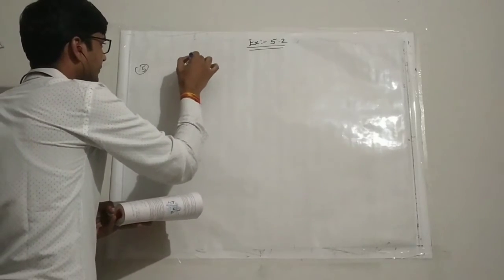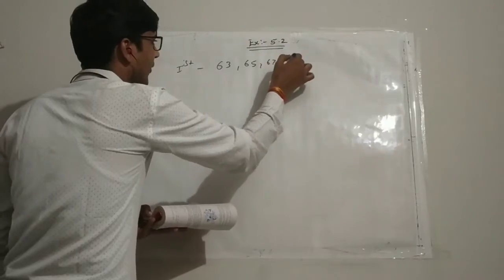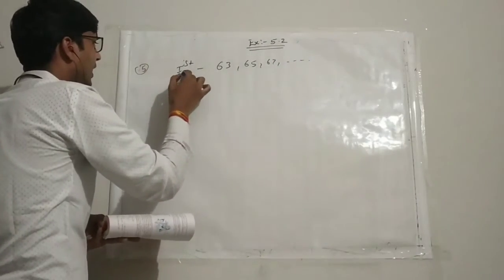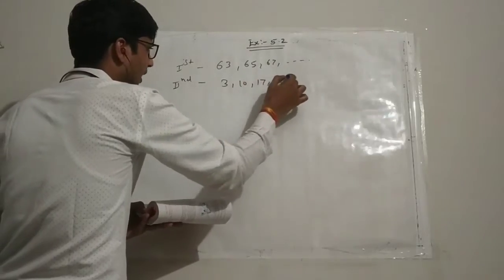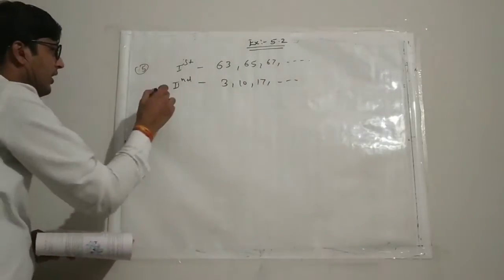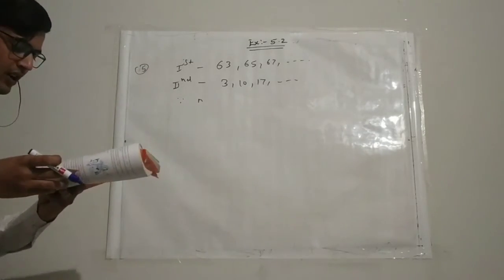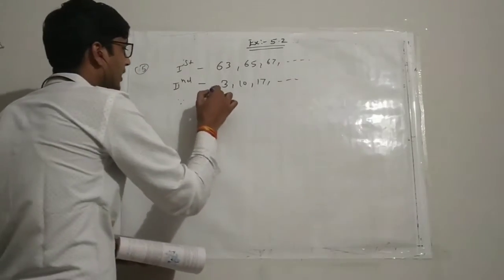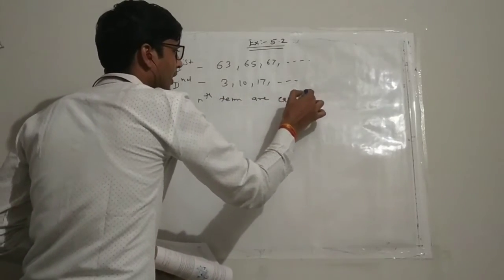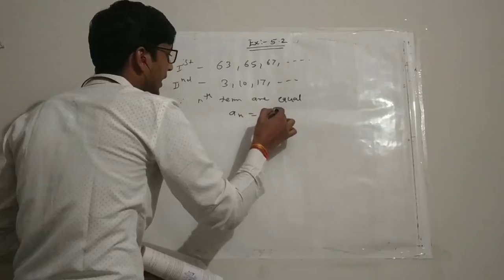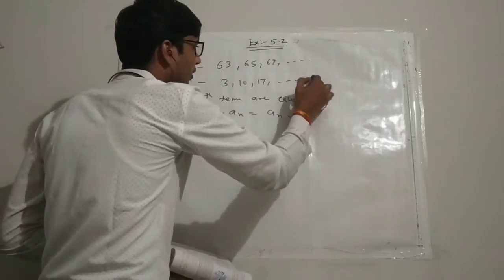The first AP is 63, 65, 67, ... and so on, and the second is 3, 10, 17, and so on. Since the nth terms are equal, we set the nth term of the first AP equal to the nth term of the second AP.